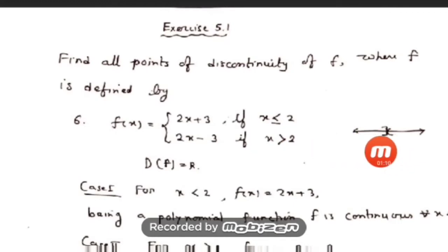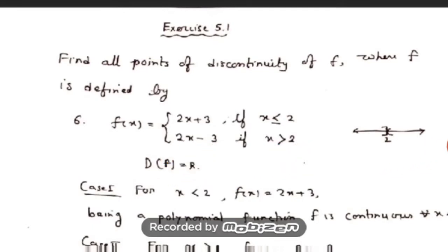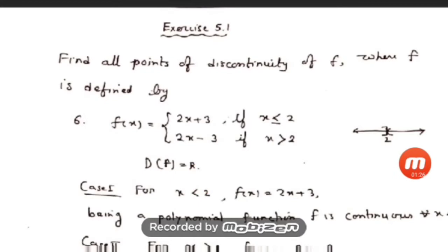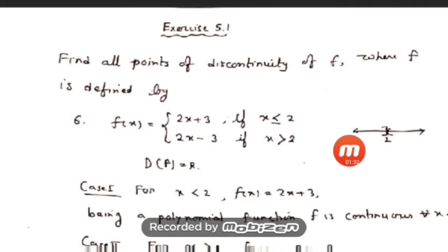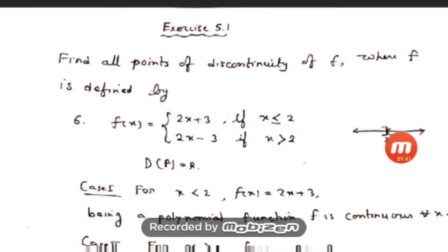One function is defined for x less than or equal to 2, that is from minus infinity to 2, and the next function is defined for x greater than 2, that is from 2 to infinity. So the domain of the function is R. The question is divided into three cases: the open interval minus infinity to 2, then from 2 to infinity, and the third case at the point x equal to 2.